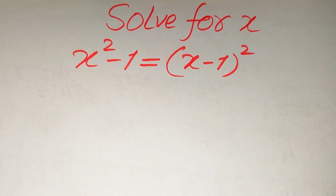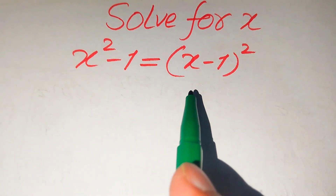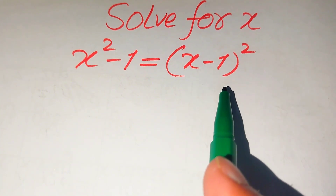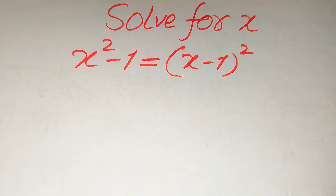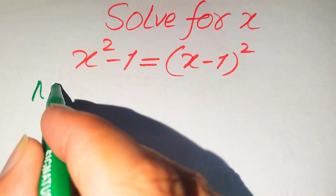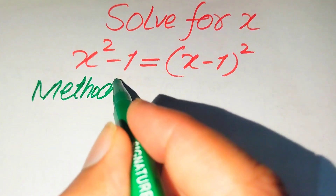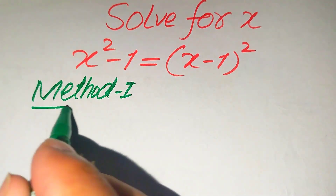Hello everyone. How to solve this problem for the values of x if we have x² - 1 equals (x - 1)². We solve this problem for two methods. I hope you like both of these methods, but if you have any other method in mind, please don't hesitate to write it into the comment section.